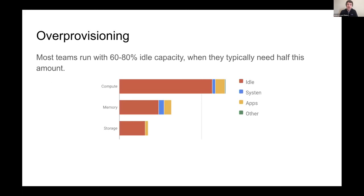It's not uncommon that when we first start working with teams, they regularly have up to 80 or sometimes even 90% idle or slack capacity. Teams that go through the exercise to measure peak usage or P99 usage can often reduce this in a major way without even looking at auto-scaling — just doing it statically. That's part one.